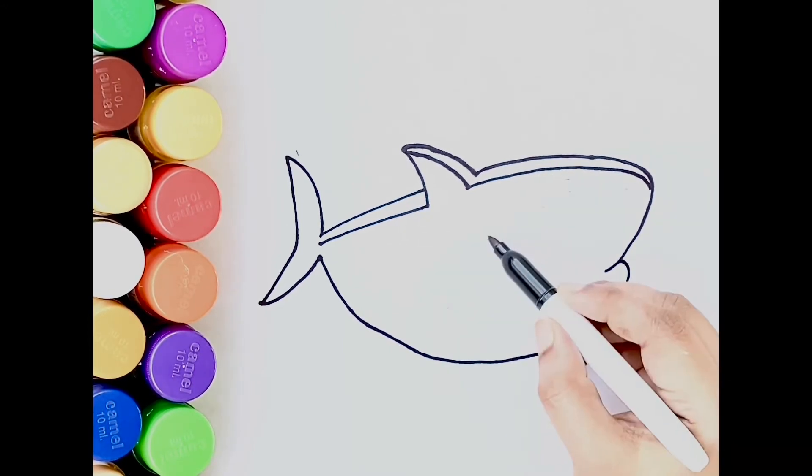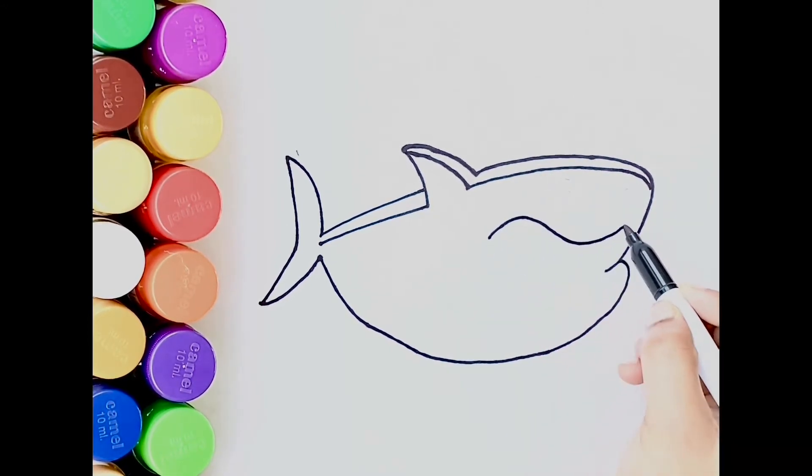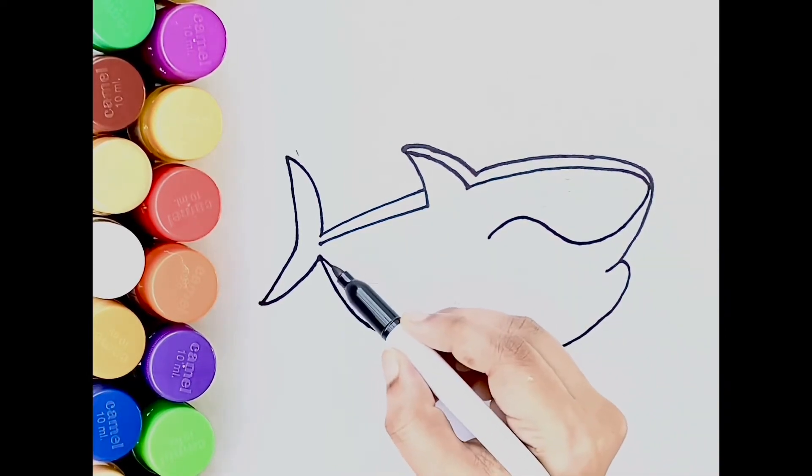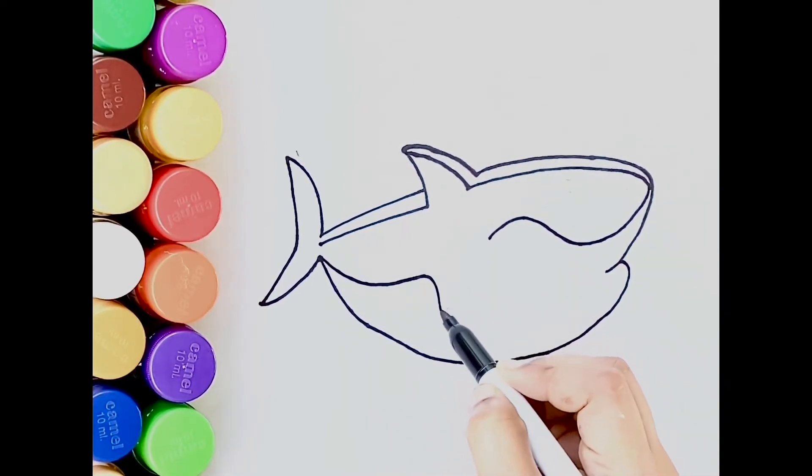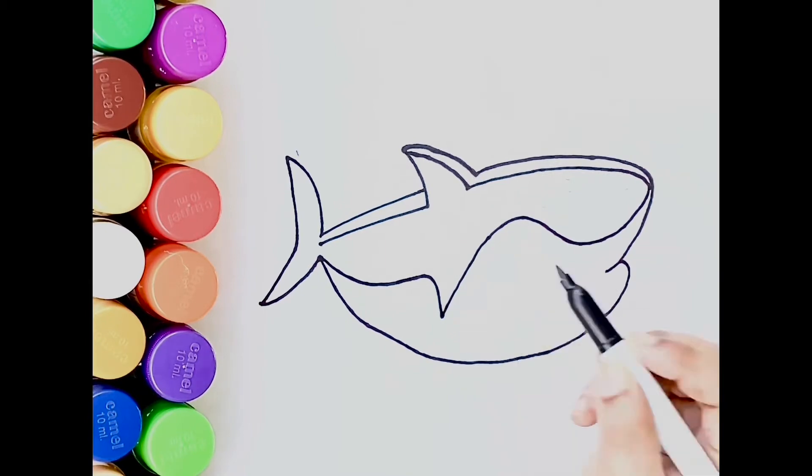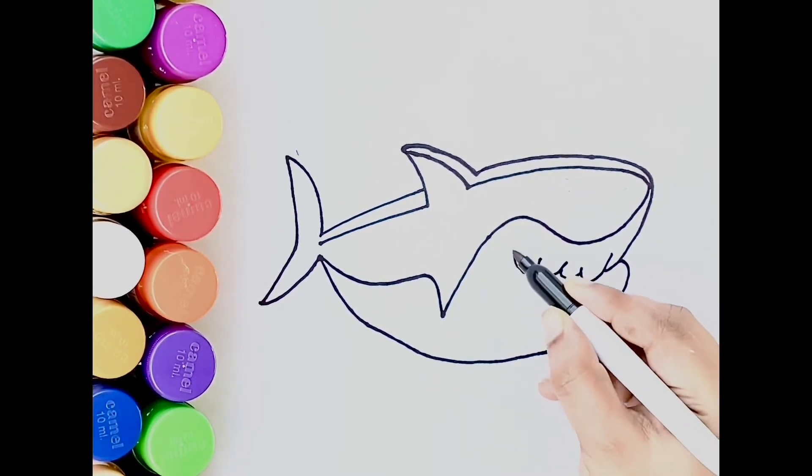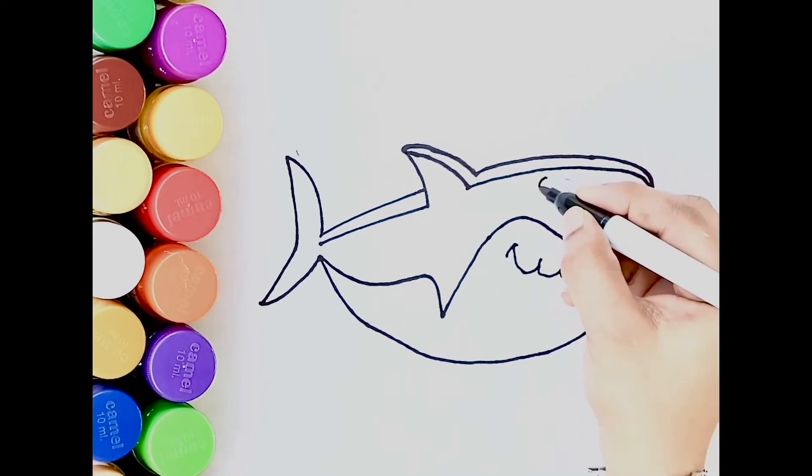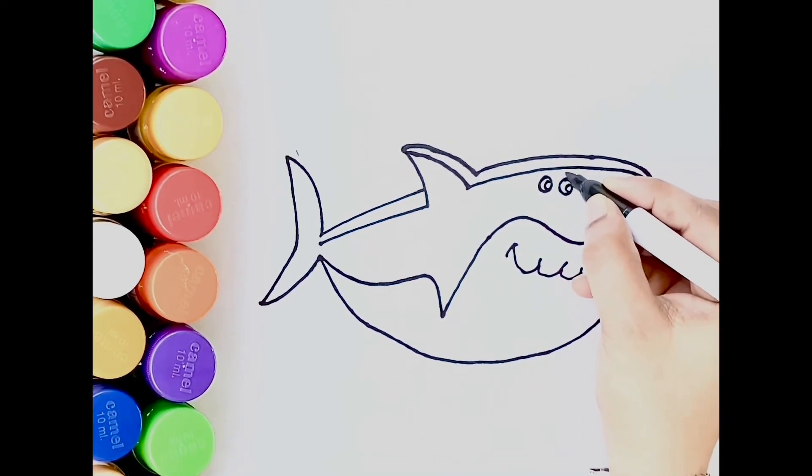Close the curve for the mouth. Now draw a down S curve. Now draw two Ws for teeth, then draw two circles for eyes.